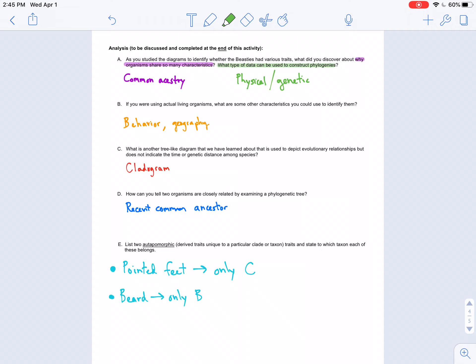And then for letter E, this autapomorphic trait refers to something that is unique to a specific clade or taxon. So only that type of organism has that feature. For example, only beastie letter C has pointed feet. That is a unique trait to letter C. And only beastie letter B has a beard. That is unique to them. So that's autapomorphic. And that will do it for our review of our phylogenetic tree lab.